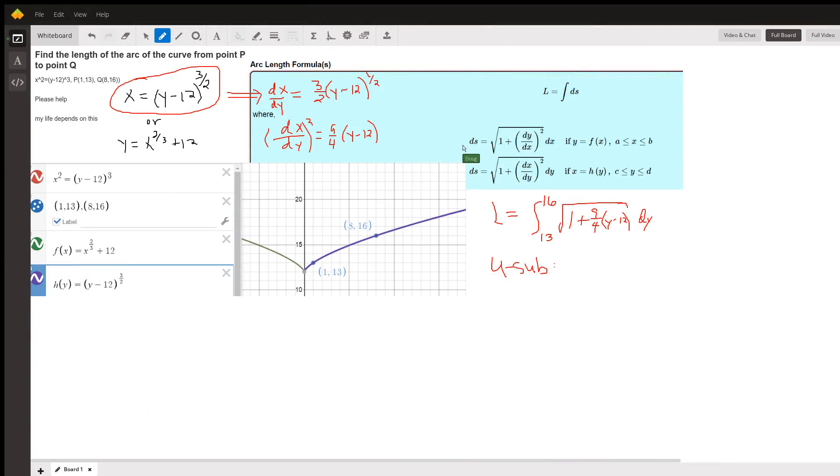OK, we're going to want to use one of these two formulas for finding the arc length, where this is the graph of our function x squared equals the quantity y minus 12 to the third power.